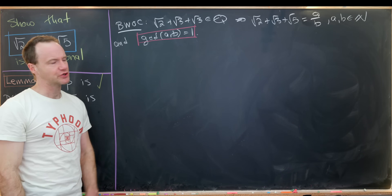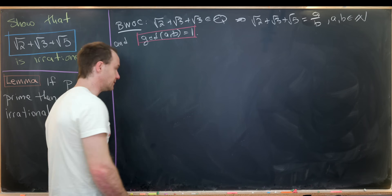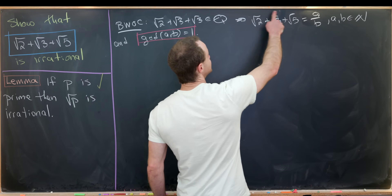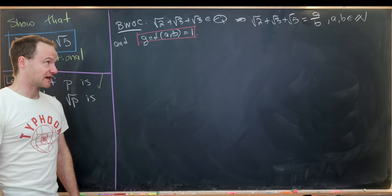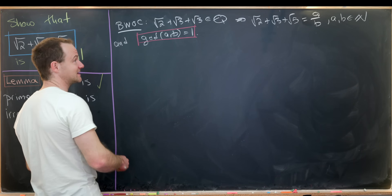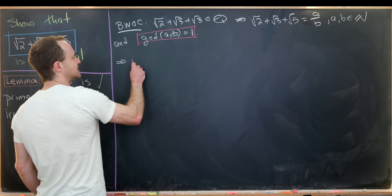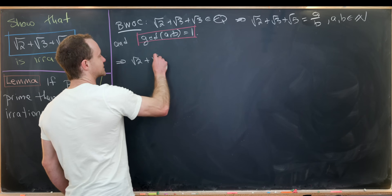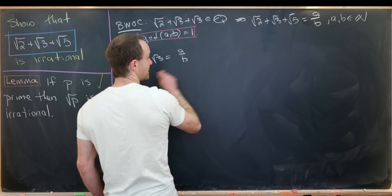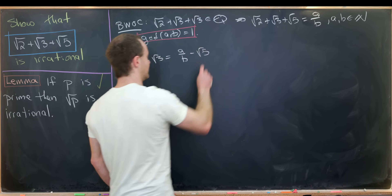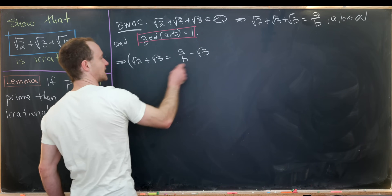So where should we go from here? I think there are probably a number of things to do, but what I'd like to do is move some things around so that I have a binomial on both sides of the equation, so it squares more nicely. In particular, I'm going to write this as the square root of 2 plus the square root of 3 equals a over b minus the square root of 5. Now maybe we'll square both sides.